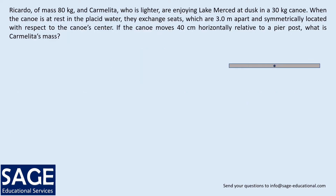The first thing we do is start with a drawing. This rectangular board represents the boat, with the dot in the middle being the center of mass of the boat. On the board we have our two people: Carmelita represented by the letter C and Ricardo represented by the letter R, and we measure distances from the pier. We do not know how far Carmelita is from the pier, so let's call that distance d. Since the boat has length l, the center of mass of the boat is at distance d plus l over 2, and the distance of Ricardo from the pier is d plus l.